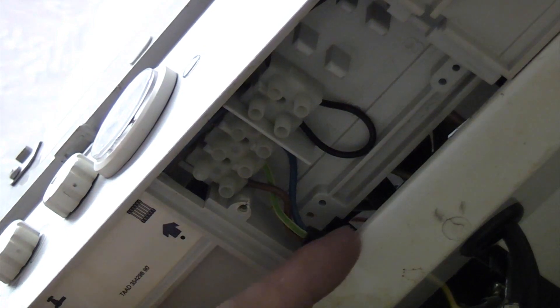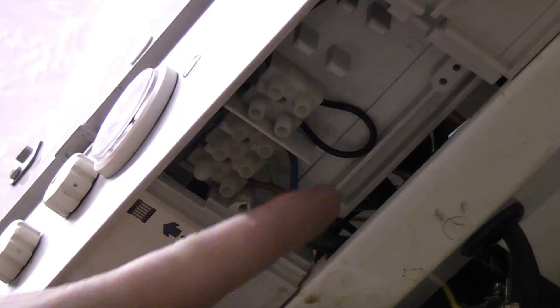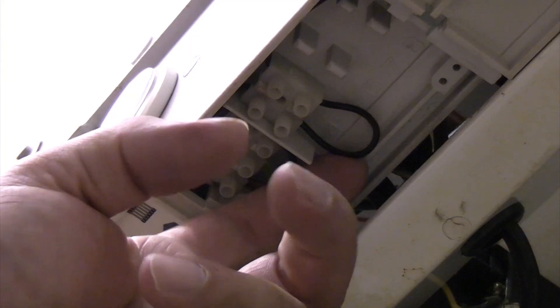So this is underneath the boiler, and that is the existing live, neutral, and earth going in, and then that is the actual terminal there where we are going to remove the link and then connect up the two switching wires from the thermostat.